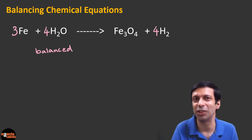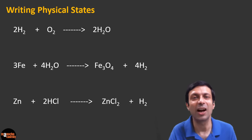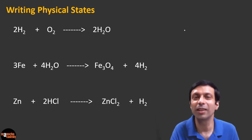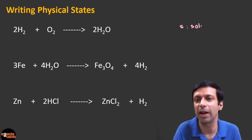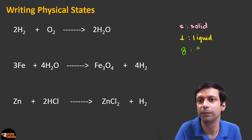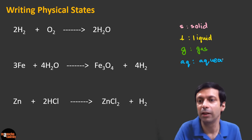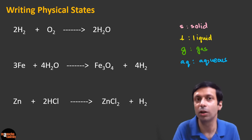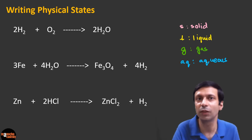In this video, we balanced simple equations — I'll show more balancing techniques in a separate video. Now let's learn how to write the physical states in a chemical equation. The important physical states are: solid (S), liquid (L), gas (G), and aqueous (AQ). What's the difference between liquid and aqueous? Aqueous means dissolved in water. Liquid can mean just water or a substance in its molten form. So aqueous means dissolved in water, and liquid means the state of the substance is liquid.